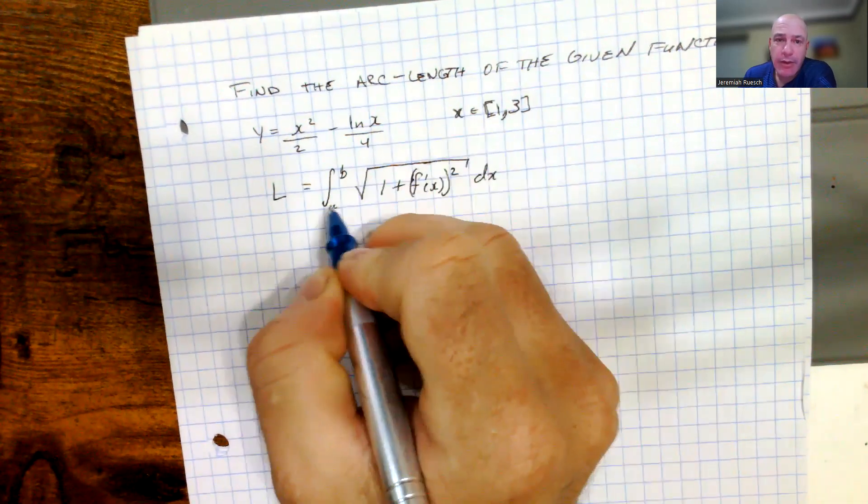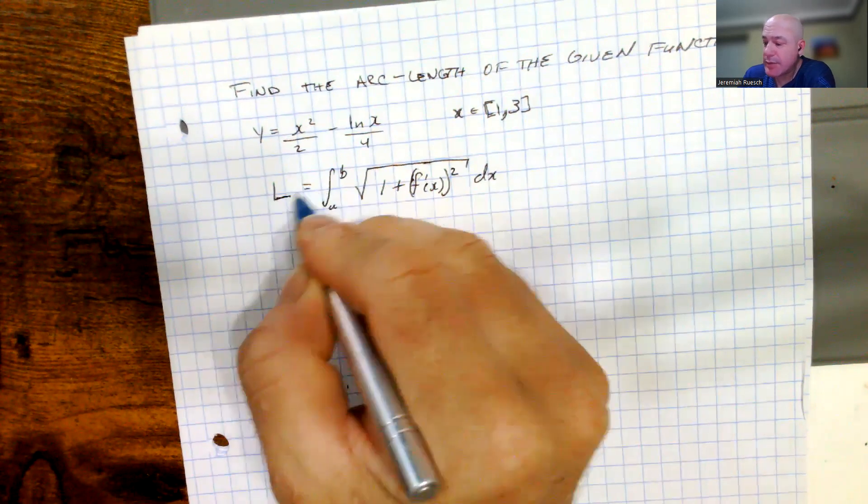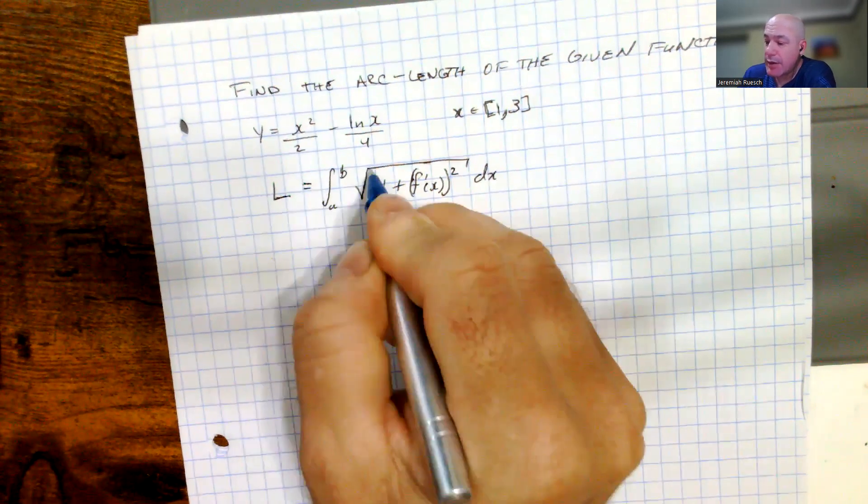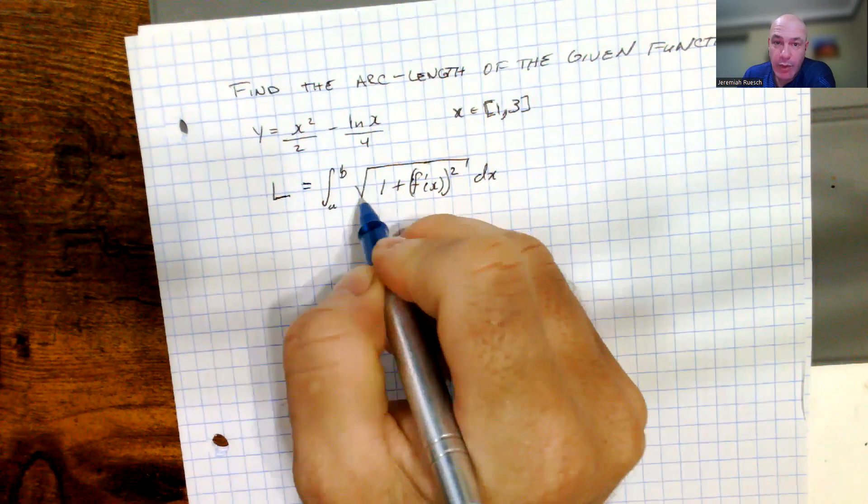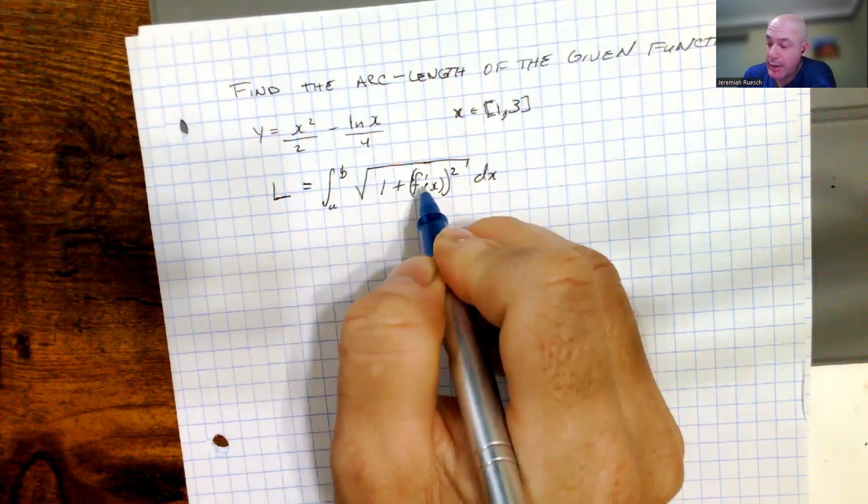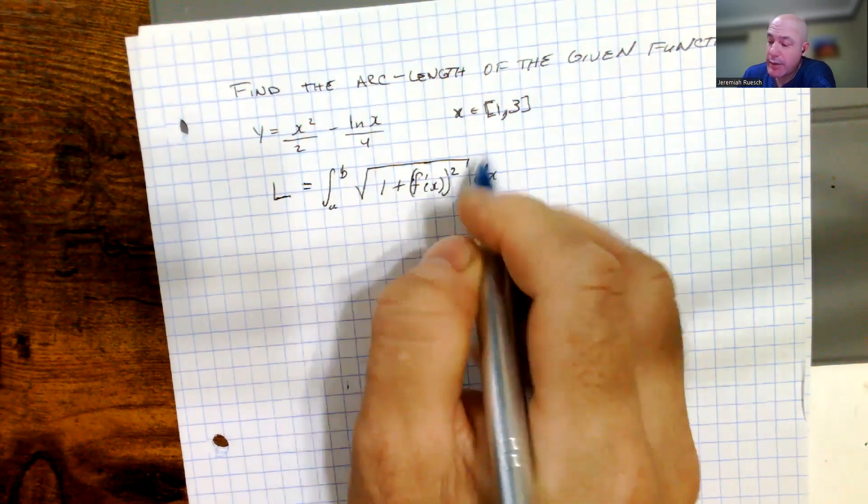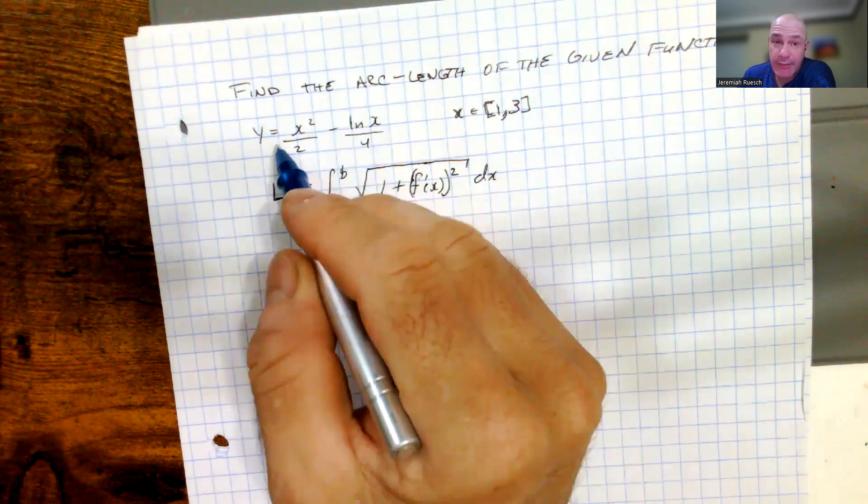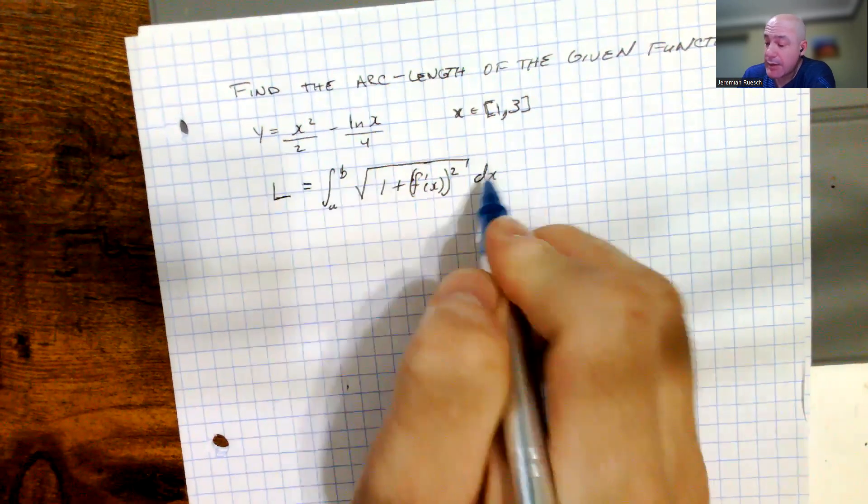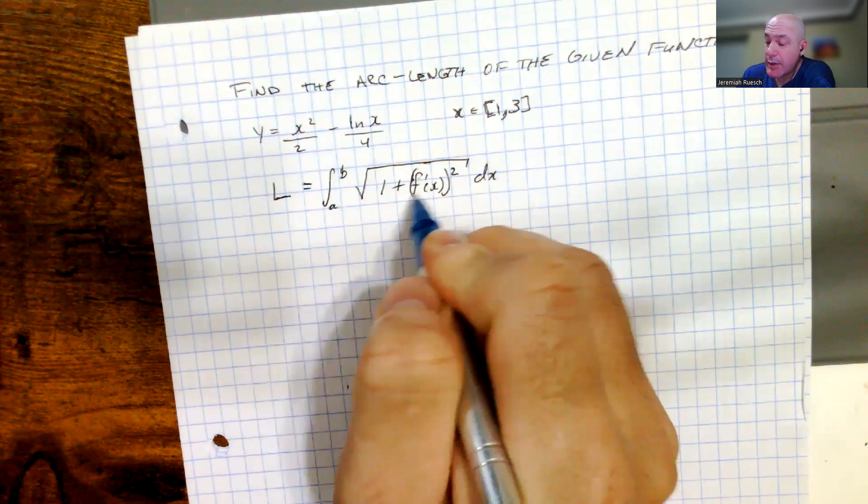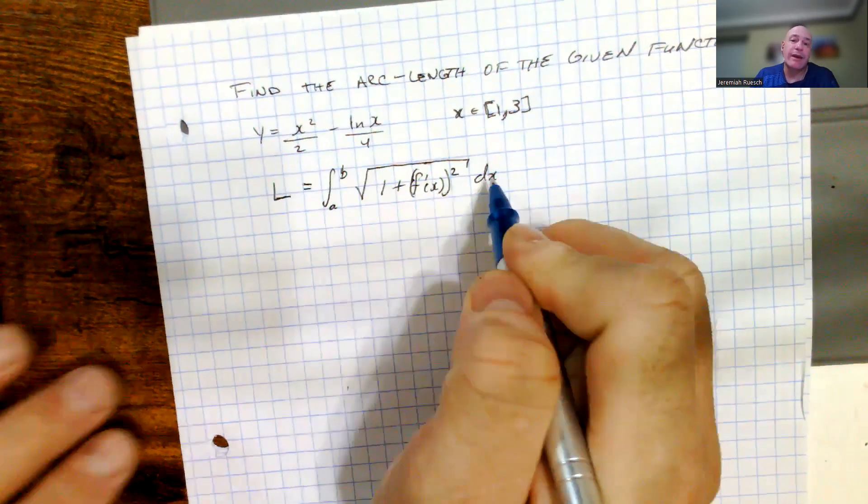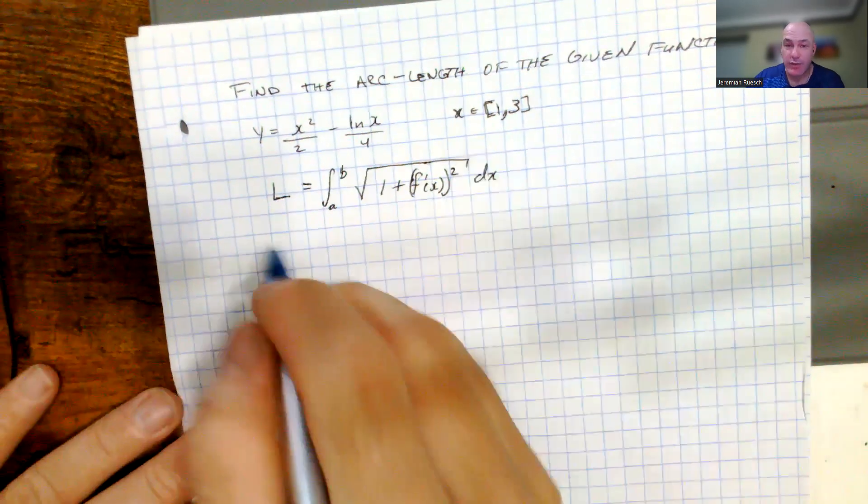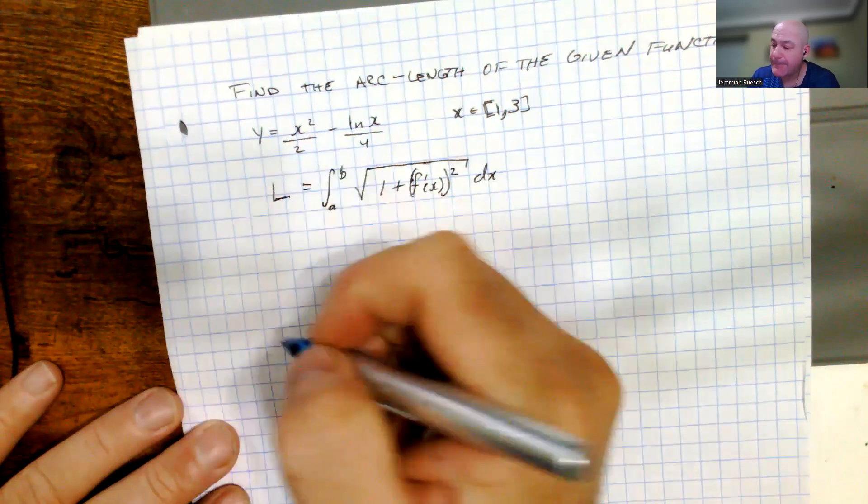So you may recall that the arc length is given by the relationship of the arc length. So then we have the square root of 1 plus the derivative squared of the function f, in this case f is y of x, dx in this interval, and we're doing that with respect to x because we're looking at the partitions along the x-axis, and we have our function in terms of x.